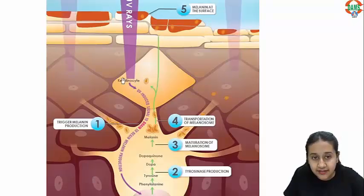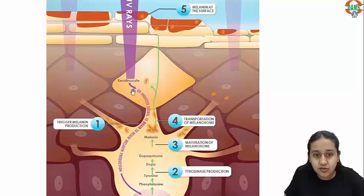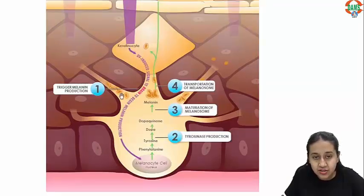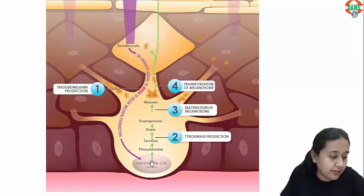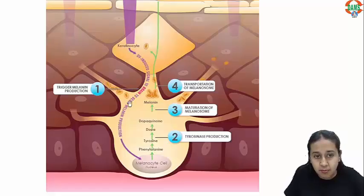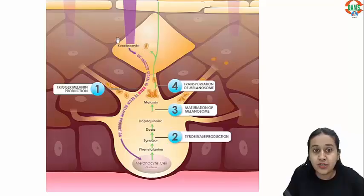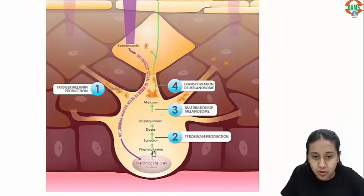These UV rays stimulate the keratinocytes, and these keratinocytes stimulate the adjacent melanocyte to produce more pigment. So you can block this stimulation.